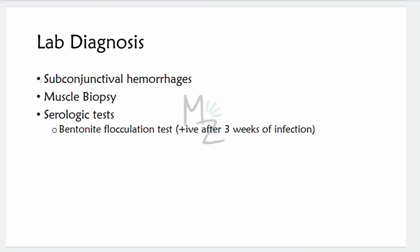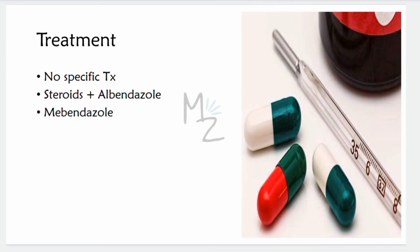Serologic tests involve detection of IgA against Trichinella spiralis, especially the bentonite flocculation test, which becomes positive three weeks after infection.